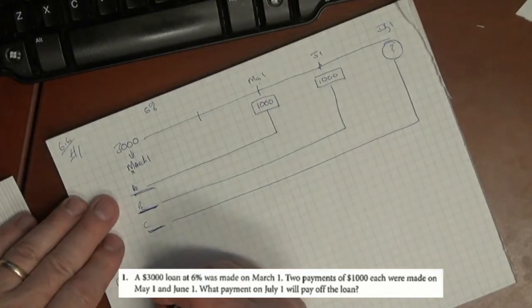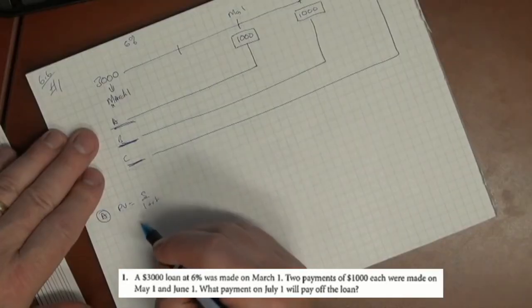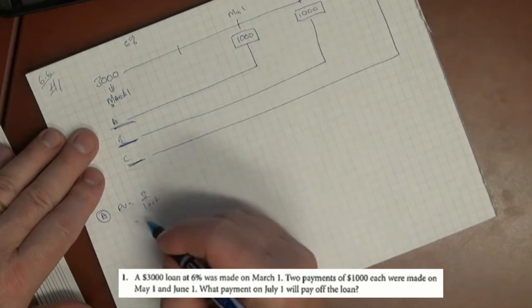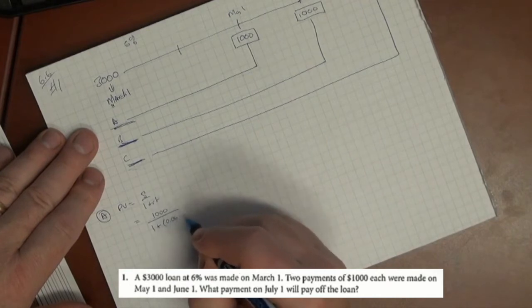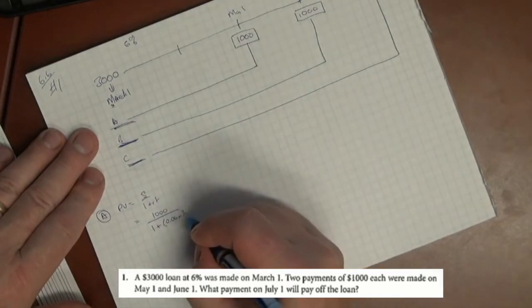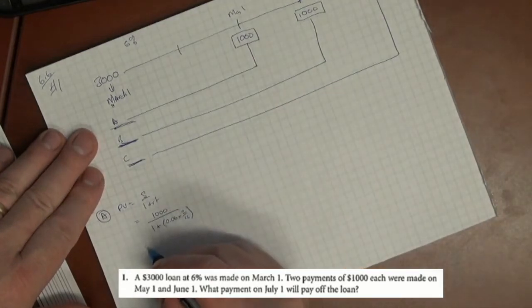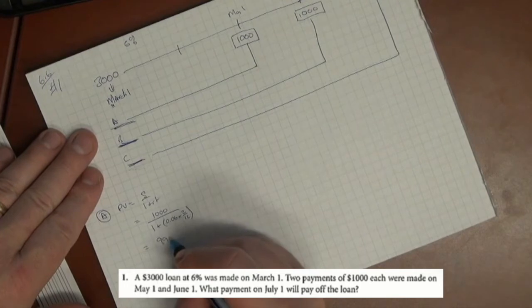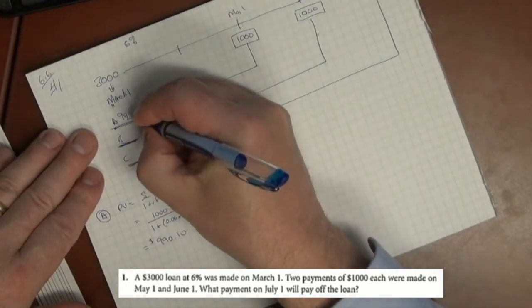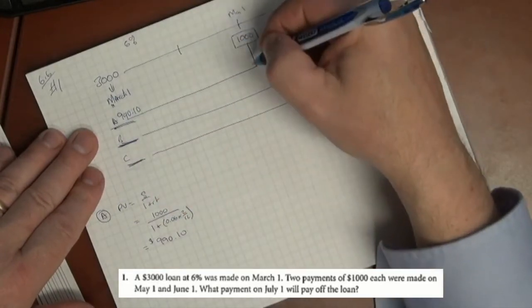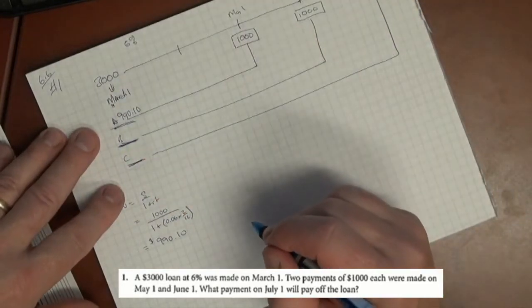I'll call these payments A, B, and C. For A, we're looking for the present value using the formula S over 1 plus RT. So the present value of $1000 divided by 1 plus 0.06 times 2 months over 12. We do that and we get $990.10. So essentially that $1000 brought back is worth $990.10.